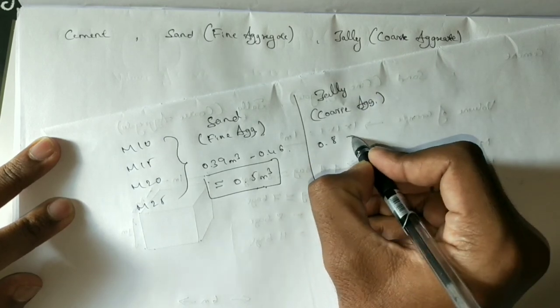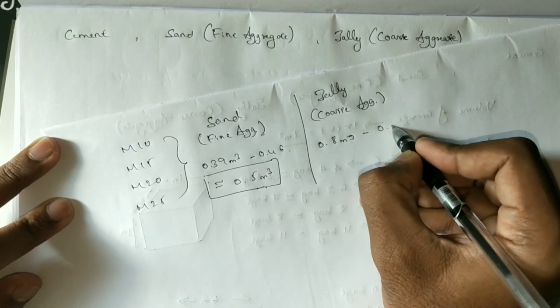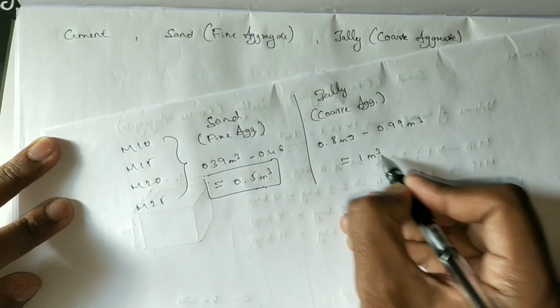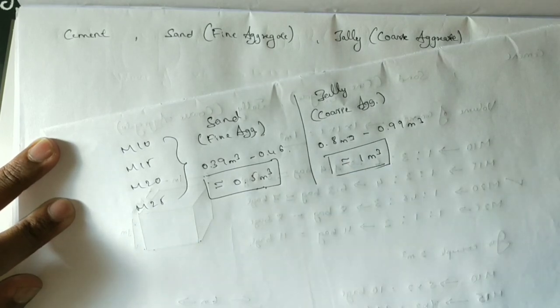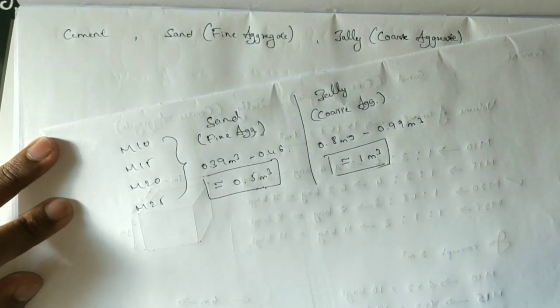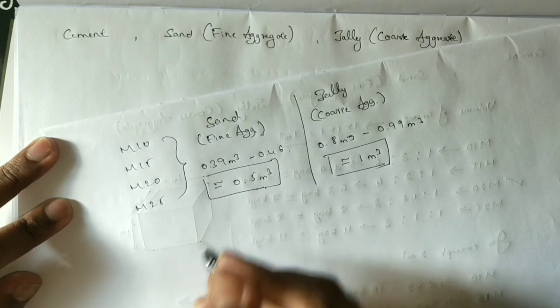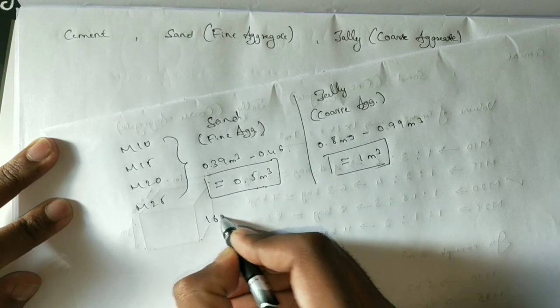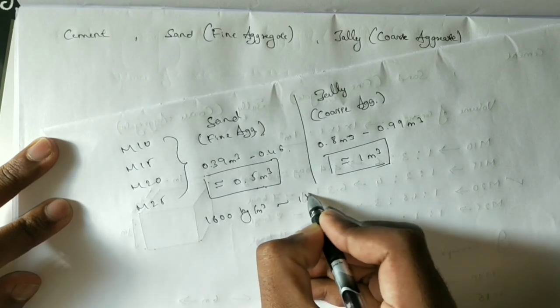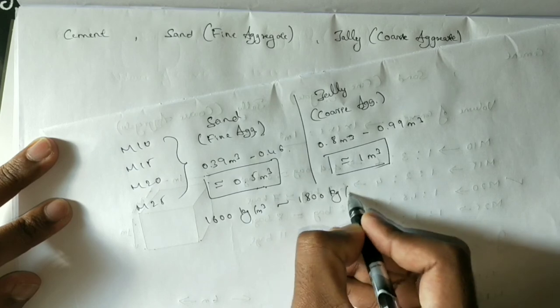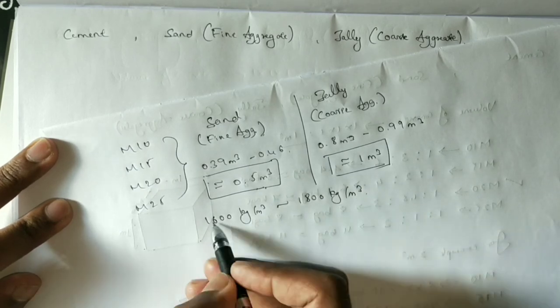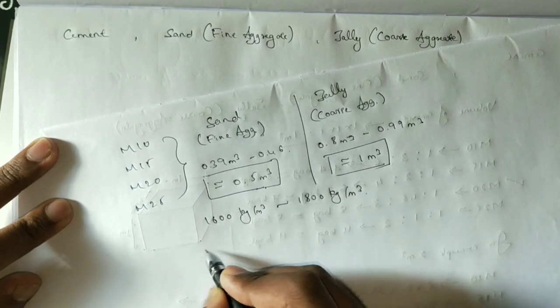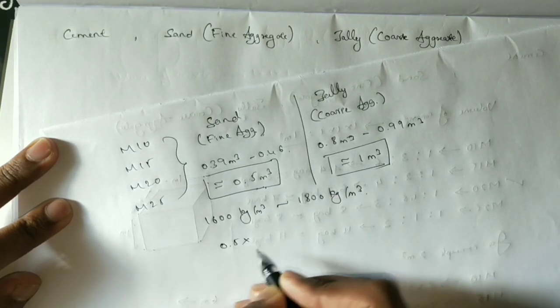For jelly (coarse aggregate), it's almost double: 0.88 cubic meters for M10, almost 0.99 cubic meters (around 1 cubic meter) for M15 and M20.